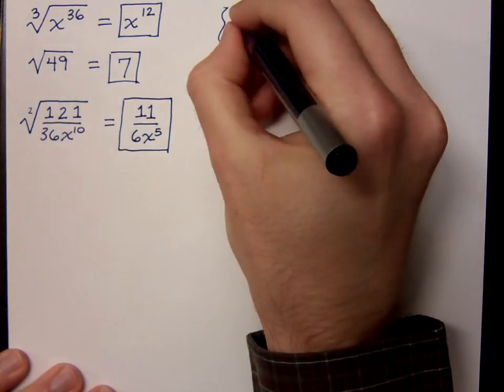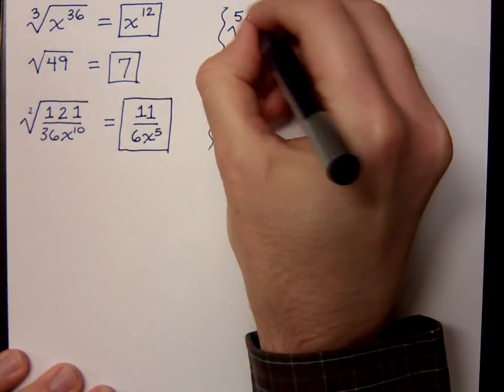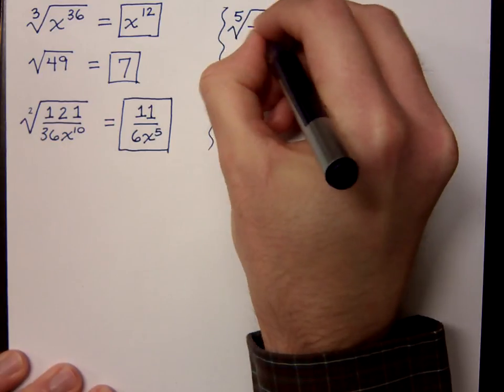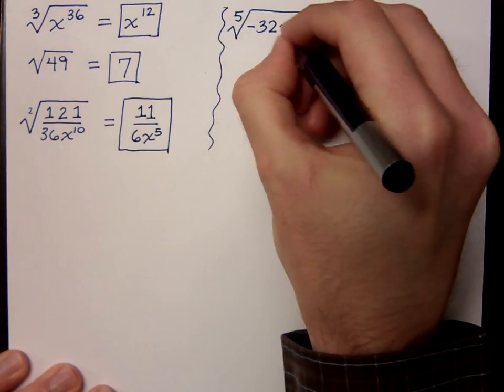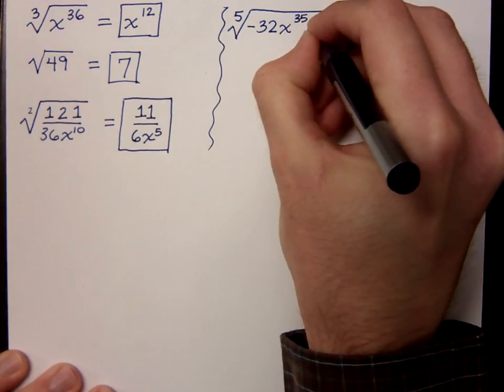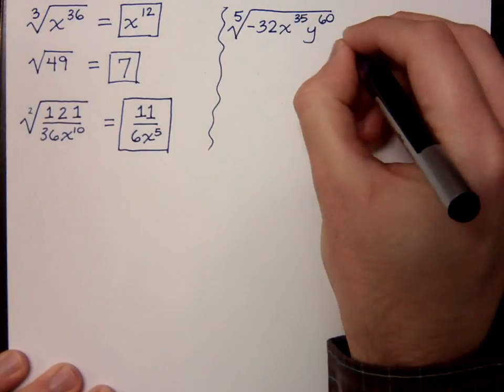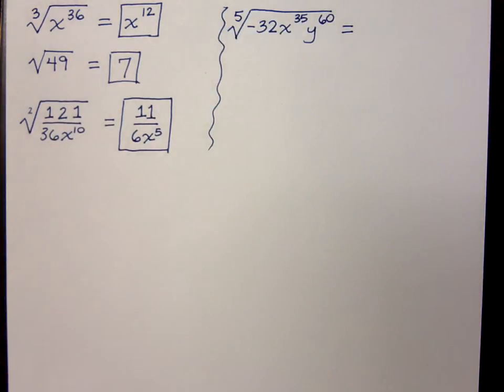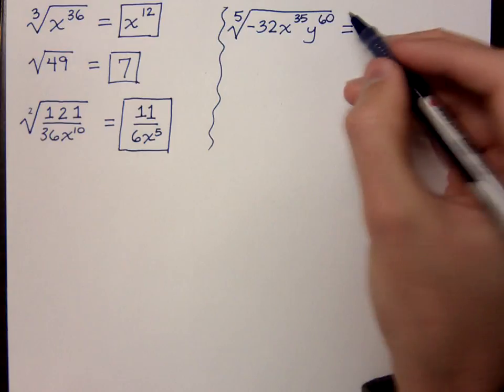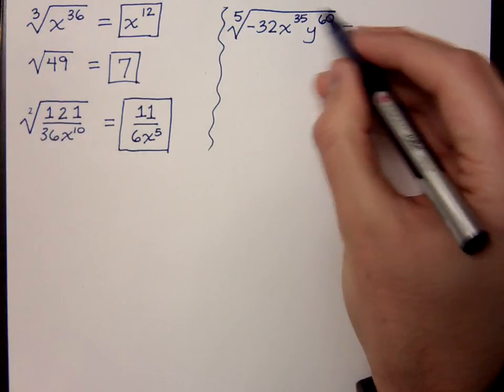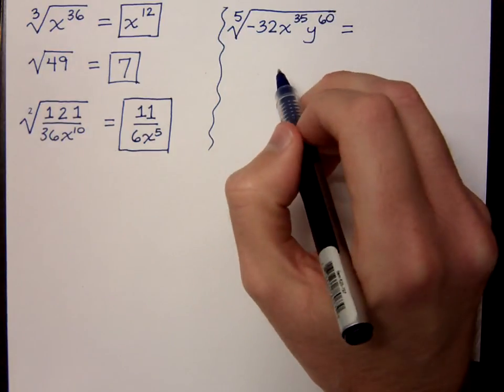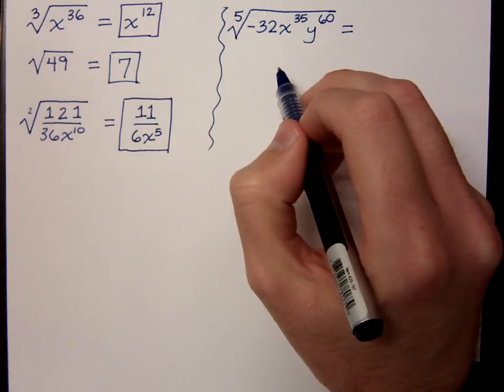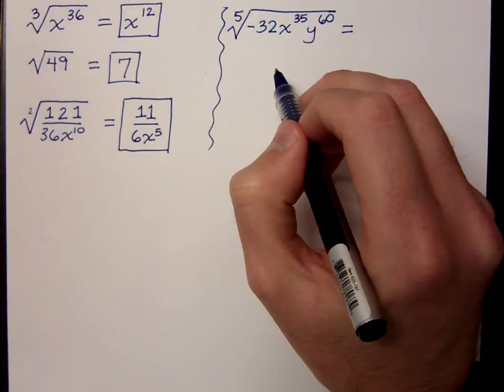Now, none of the stuff that we're doing here is new. Even if I were to do the 5th root of negative 32x to the 35th, y to the 60th. All of that is inside the radical. All of that is inside the radical. When you do your radical symbol, make sure that you go as far as you need to go. All right? Because if you stop, like, over the x to the 35th, then it's kind of hard to see whether or not that y is supposed to be in there. Do not leave anything up to chance or to interpretation. Make sure that everything you write and say is clear.